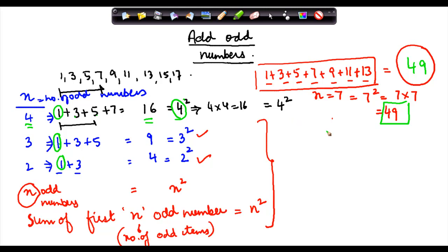So therefore, as a corollary, I mean I said that if I take n odd numbers their sum is equal to n squared. You can also say here that n squared is also equal to the sum of first n odd numbers, right?